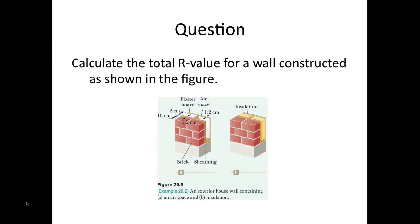So here's a question for us to try. Calculate the total R value for a wall constructed as shown. So we've got bricks, we've then got some sheathing, we've got an air space, and finally we've got some plasterboard.